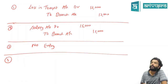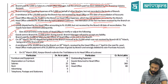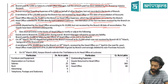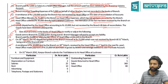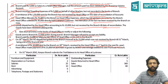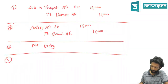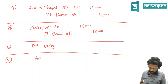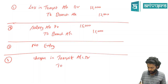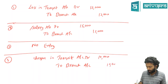Fourth scenario: remittance of 10,000 sent by branch on 30th March, received by HO only on 1st April. Branch has already sent it so it should be recorded. HO entry: Cheque-in-Transit Account debit to Branch Account 10,000. This is recorded because we trust the branch's remittance, and it needs to appear in the consolidated statement.